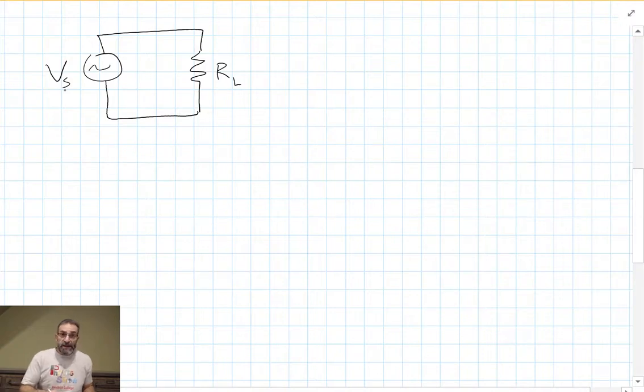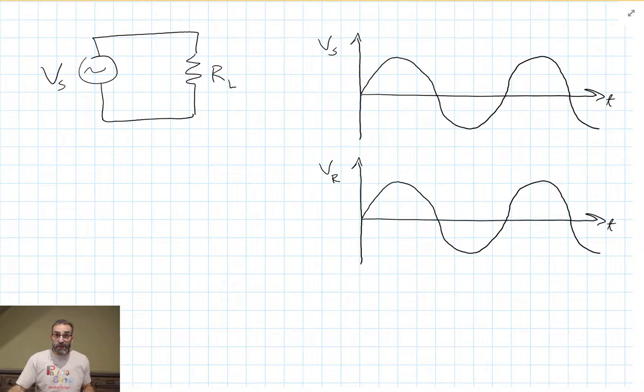In this case we have some AC source voltage being applied to some load, a resistor of some type. Maybe it's a light, maybe it's a toaster, maybe it's a laptop. Some load resistor. We know that our source is putting out an AC signal, a sine wave, and that's the same as the voltage we would read across the resistor. Half of the time the current is moving in one direction when the potential is positive, and half of the time the current is moving the opposite direction through the resistor when the potential is negative.